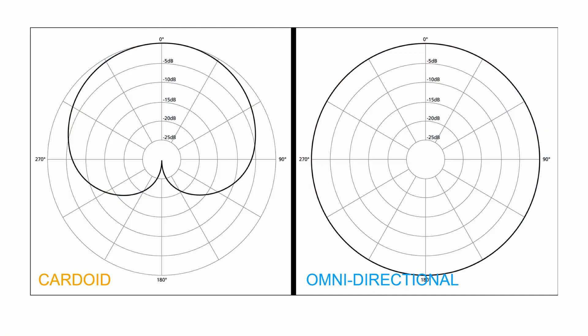Microphones also have what's called a pickup pattern, which is essentially a shape that describes the sensitivity based on the directional orientation around the microphone. For us, and in this use case, the main distinction here is whether a microphone is directional or omnidirectional — so does it pick up sound in just one direction or does it pick up sounds from all directions?